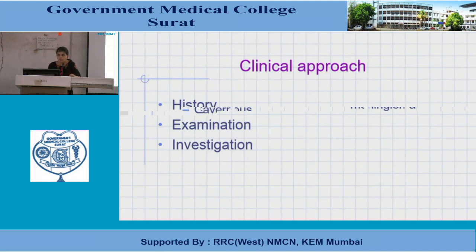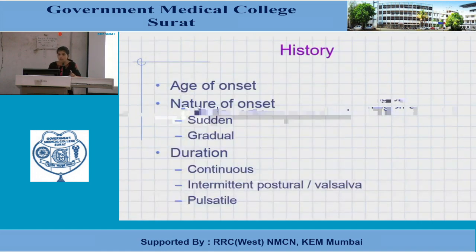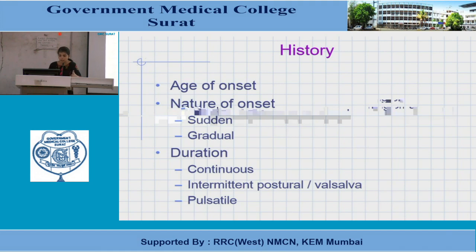To approach a patient with proptosis, we go through history, examination, and various investigations. In history, we ask about age — many causes are common in the pediatric age group, others in adults. Nature: sudden onset is mainly due to trauma, while gradual onset is neoplastic. Duration: is it continuously progressive, or intermittent — as seen in orbital varices and aneurysm?